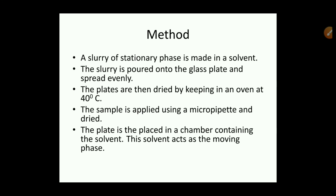In the TLC method, a slurry of the stationary phase is made in a solvent, poured onto a glass plate, and spread evenly. The plates are dried in an oven at 40 degrees Celsius. The sample is applied using a micro pipette and dried. The coated plate is then placed in a chamber containing the solvent, which acts as the moving phase.